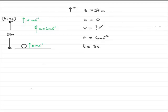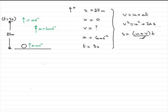So in fact, we've got quite a lot of equations that we could actually use to work out V. We've got V equals U plus AT. We've got V squared equals U squared plus 2AS. We've got S equals U plus V times T all divided by two. Or we've even got S equals VT minus a half AT squared.